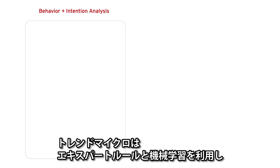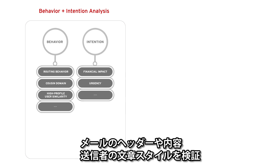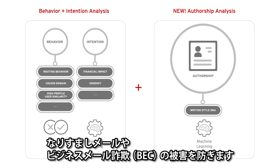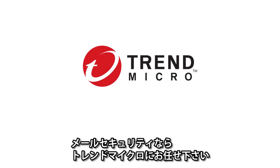Using expert system and machine learning, Trend Micro checks your email header, content, and authorship to ensure it's not from an imposter carrying out damaging business email compromise attacks.